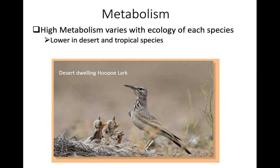Where an organism lives also contributes to selection pressure on metabolic rate. Birds living in tropical or desert areas tend to have lower metabolism for a given size. They're living in hotter, warmer habitats where they don't need as much metabolism — and in fact, a really high metabolic rate in those conditions could be counterproductive.